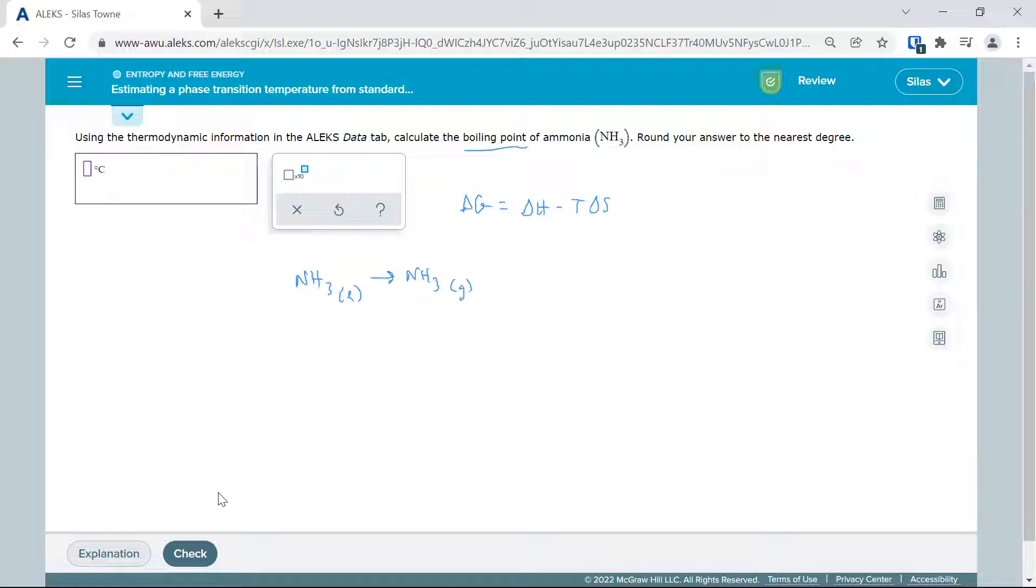The other important thing is understanding that delta G is equal to zero at either the melting or the boiling point. And that's because we have these heating curves, we're dealing with the intermolecular forces. So we're at this equilibrium point when we're melting or boiling. Delta G is at zero because the temperature is not changing.